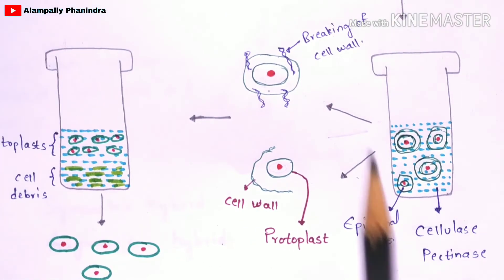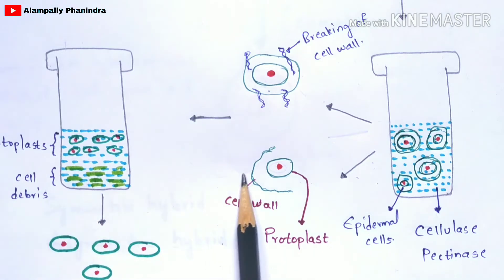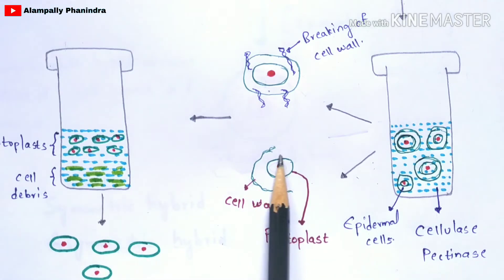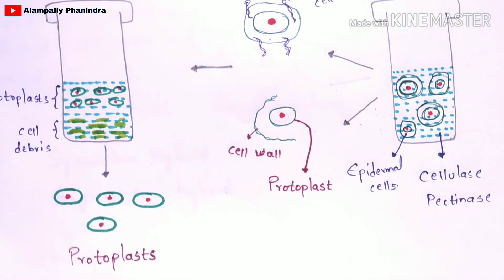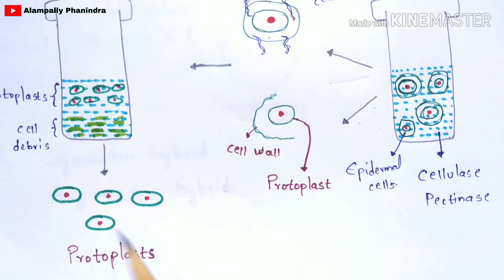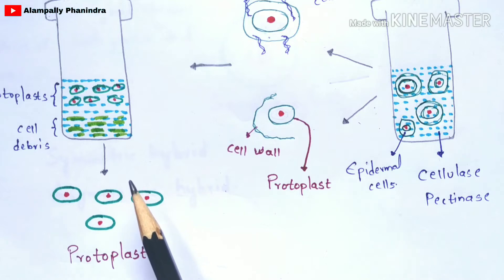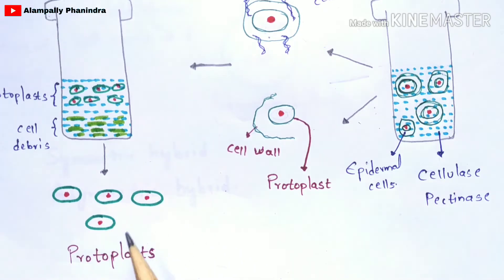After the cell wall is broken down by the enzymes, a layer forms at the bottom of the test tube called cell debris — this is all the removed cell wall material that has settled. The remaining protoplasm settles in the upper layer above the cell debris. You then isolate this protoplasm, and these isolated units are called protoplasts — cells with no cell wall.